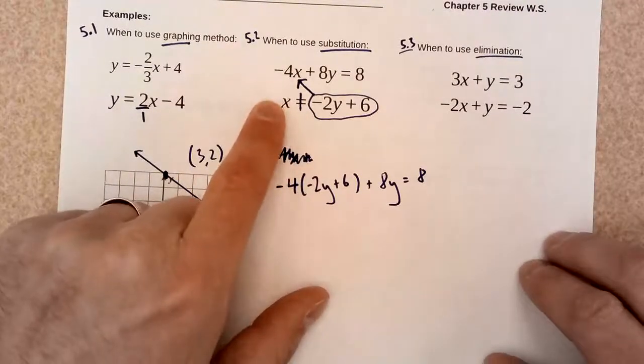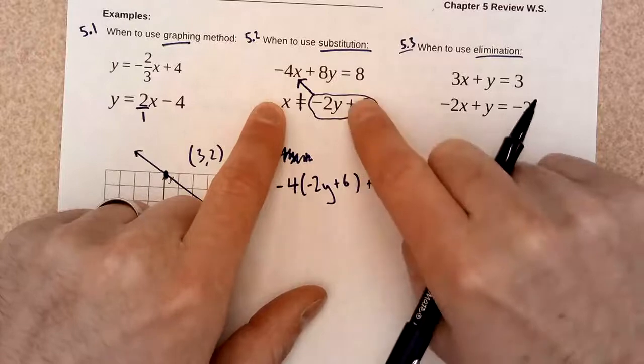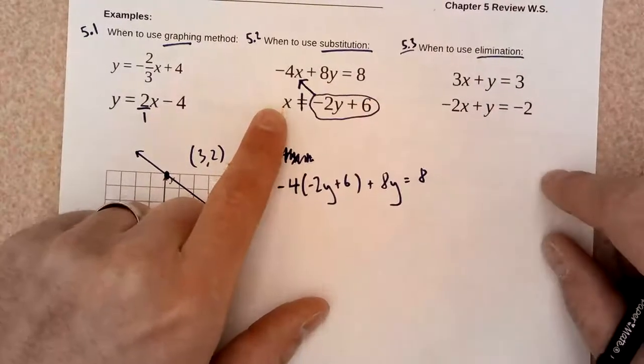So, find a variable by itself. Take the expression for that variable and put it into your other equation.